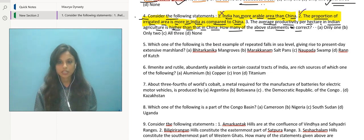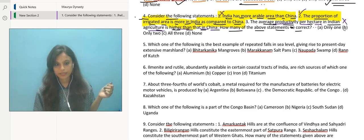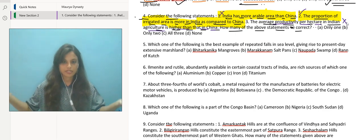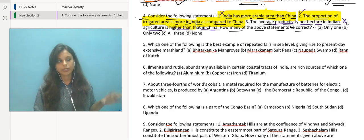Third statement: the average productivity per hectare in Indian agriculture is higher than that in China. This statement is actually incorrect. Why? Because China generally has a higher average productivity per hectare. Factors such as technological advancements definitely play a very important role. The new agriculture practices are more modern, more technologically advanced in China, and the infrastructure that contributes to Chinese agriculture is very advanced and developed when compared to India's agricultural infrastructure.